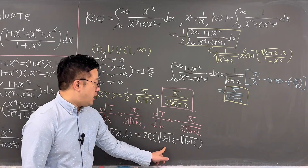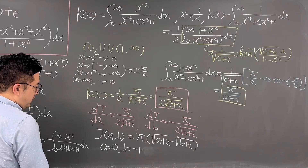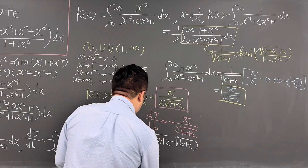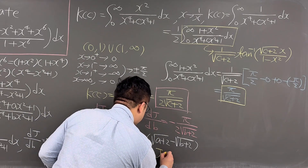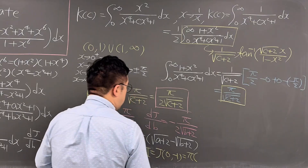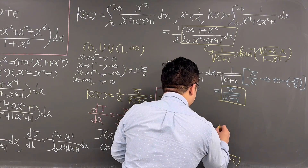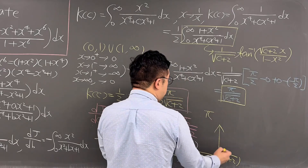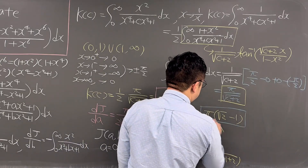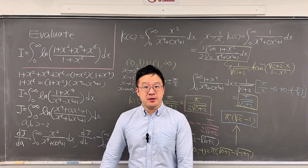In our case, a = 0 and b = −1. The integral I we are looking for is J(0, −1). This equals π times (√(0+2) − √(−1+2)) = π times (√2 − 1). So π(√2 − 1) is the answer for this integral. Pretty interesting viewer-suggested integral — how amazing!